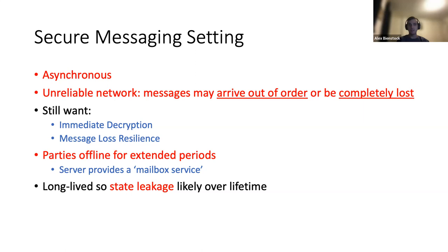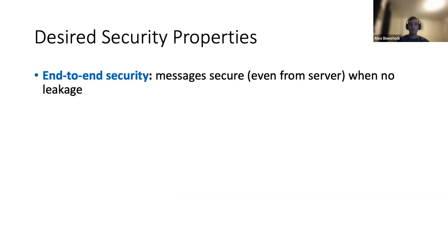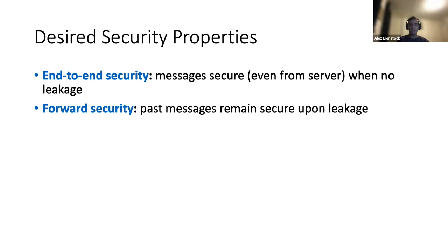Also these sessions are long-lived, so state leakage might be likely over the lifetime of the session — and by this I mean a sort of transient snapshot of the state. Also devices could be using bad randomness. So the properties that we want from a secure messaging protocol are first of all end-to-end security, meaning that messages should be secure even from the delivery server when there's no leakage. And if there is leakage, past messages should still remain secure despite this leakage.